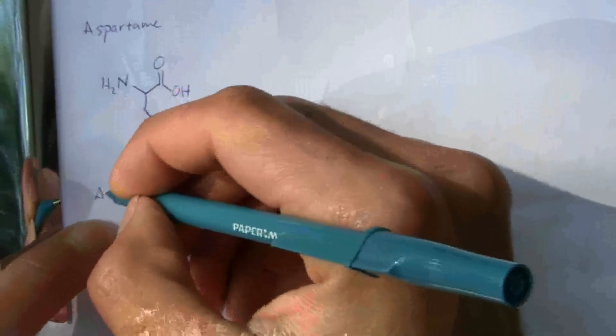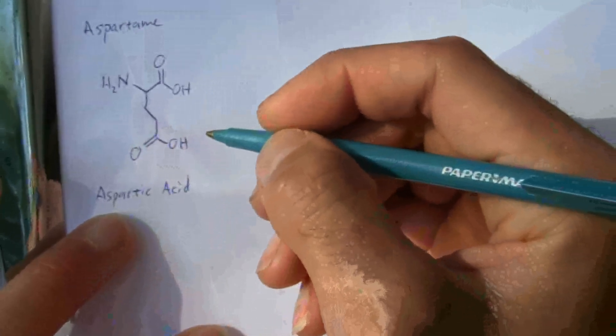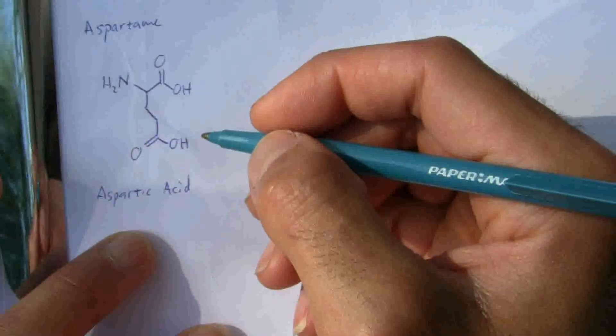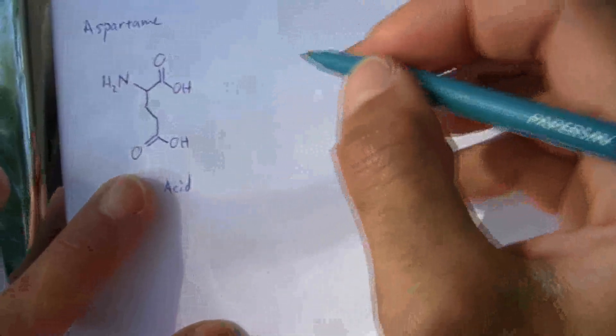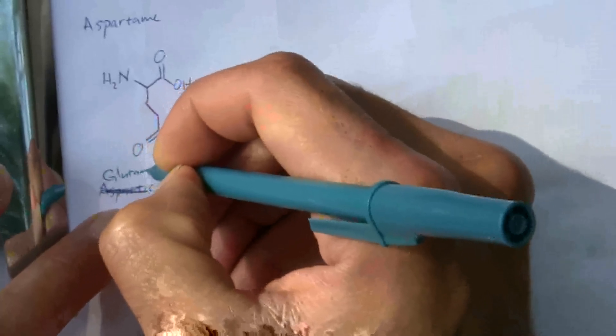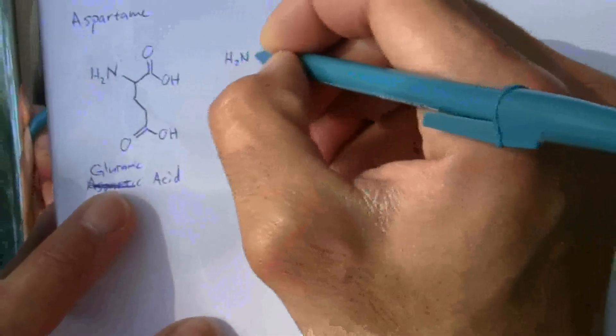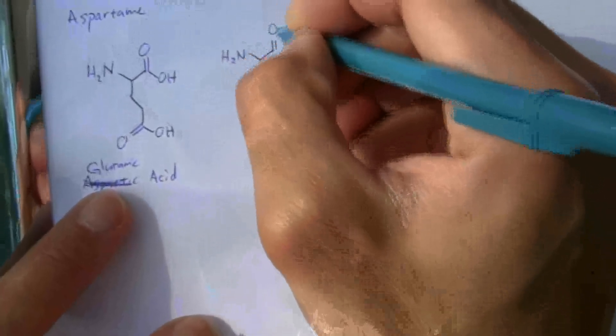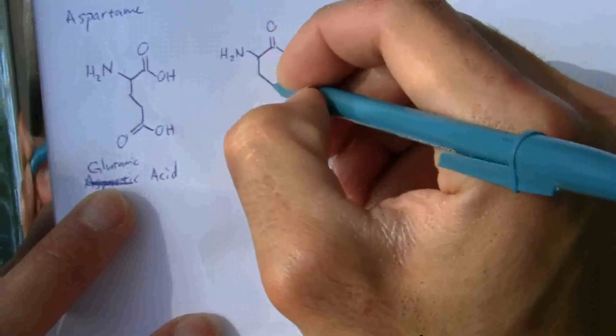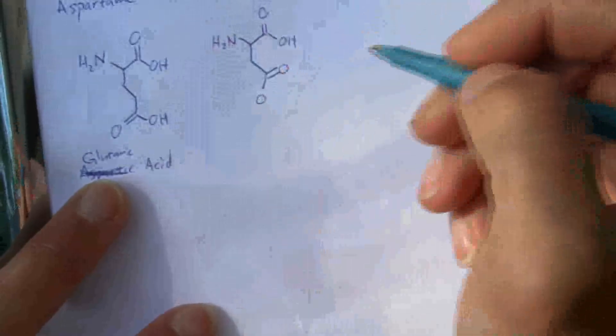This one is aspartic acid. I'm sorry, this is glutamic acid. That's what I did before. Very similar is aspartic acid, which the only difference... they all have that same basic part at the top. They have a different group here, and the difference is it only has one carbon in between instead of two.